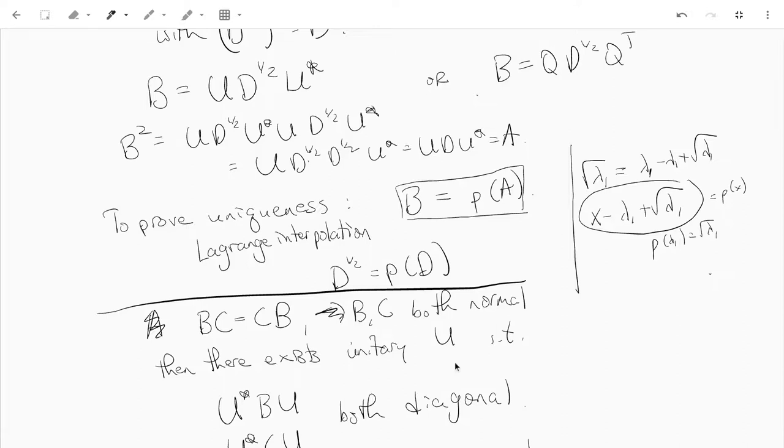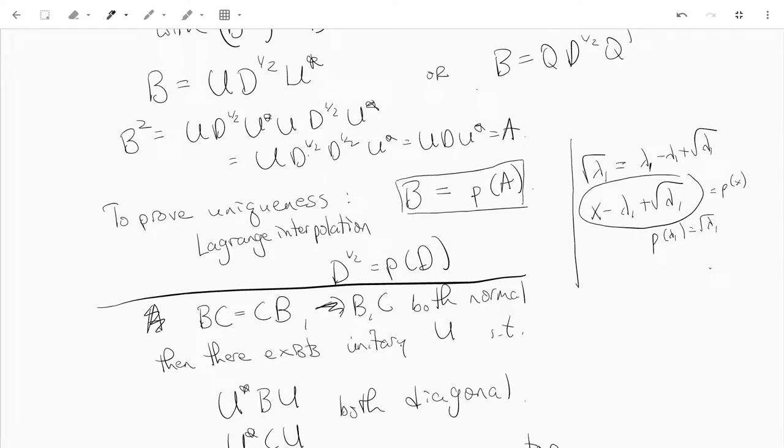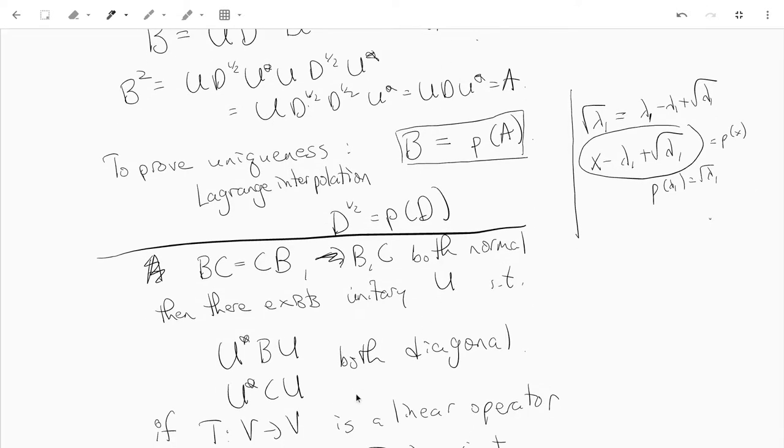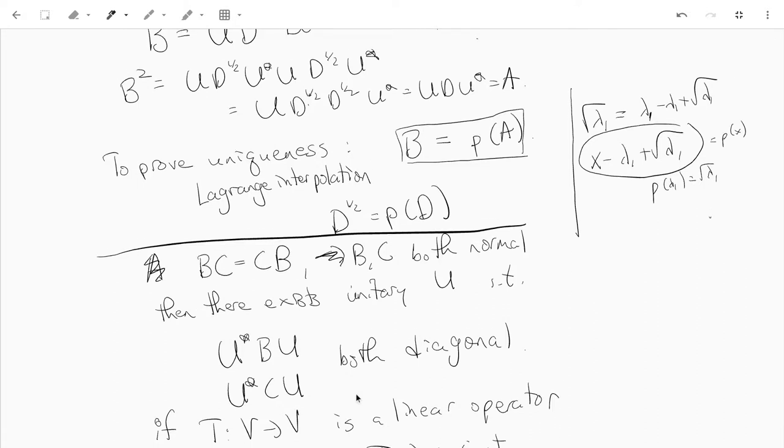The other ingredient you need to prove this uniqueness is that if B and C are both normal matrices that commute, so BC equals CB, then there is a unitary matrix U which diagonalizes both B and C simultaneously. And the proof of this kind of thing uses...